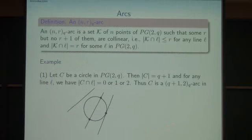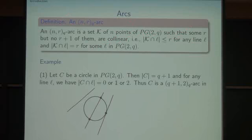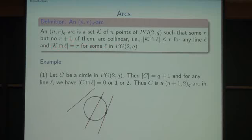So what is an arc? An (n,r,Q) arc is a set of n points of PG(2,Q) such that some r points of K, but no r plus one points of them, are collinear. That is, any line meets K in at most r points, and some line meets K in exactly r points.